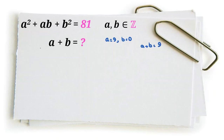But we should check whether there are any other answers. We can treat this as a quadratic equation in terms of a: a squared plus ab plus b squared minus 81 equals 0.